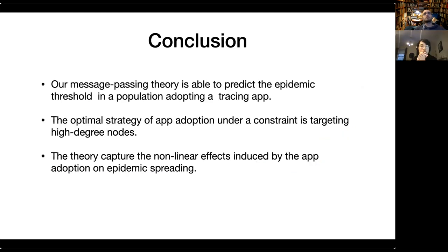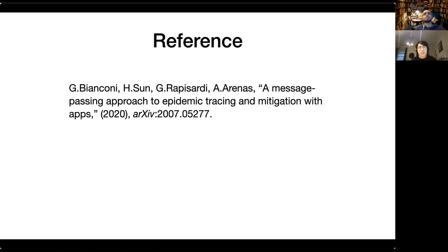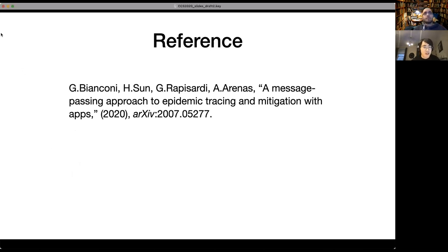In conclusion, our message passing theory is able to predict the epidemic threshold in a population adopting a tracing app. The optimal strategy for app adoption under a constraint is targeting high-degree nodes. The theory captures the nonlinear effect induced by app adoption on epidemic spreading. Thank you very much for your attention.